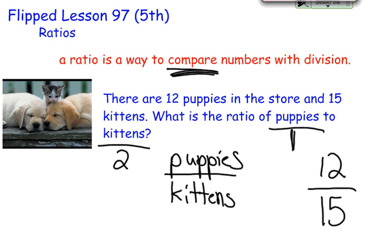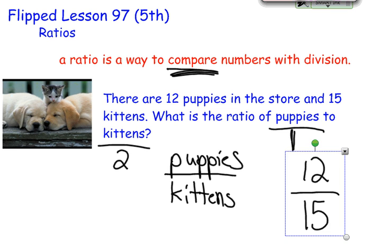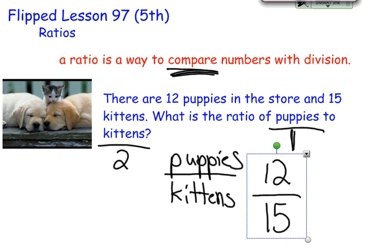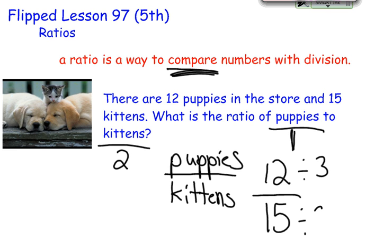However, we have a fraction here. And because we have a fraction, we do want to reduce fractions. So ratios can be reduced, unless it tells you not to. So if we're going to reduce it, we're going to look for greatest common factor. And in this case, we're going to find that 3 is the greatest common factor. So 12 divided by 3 equals 4, and 15 divided by 3 equals 5. And so the ratio is really 4 to 5 — for every 4 puppies, there are 5 kittens.